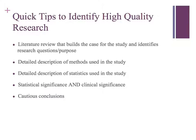Thinking more about appraising — a couple of quick tips to identify high-quality research. First, it should be introduced by a literature review that builds the case for why the study was conducted and clearly identifies the purpose and research questions. The method should be detailed; you should be able to find answers to your questions in the method section. Sometimes information I felt was important was missing from studies, which is frustrating, but it doesn't mean the study itself isn't quality — it just means the authors didn't give enough information to be fully critical.